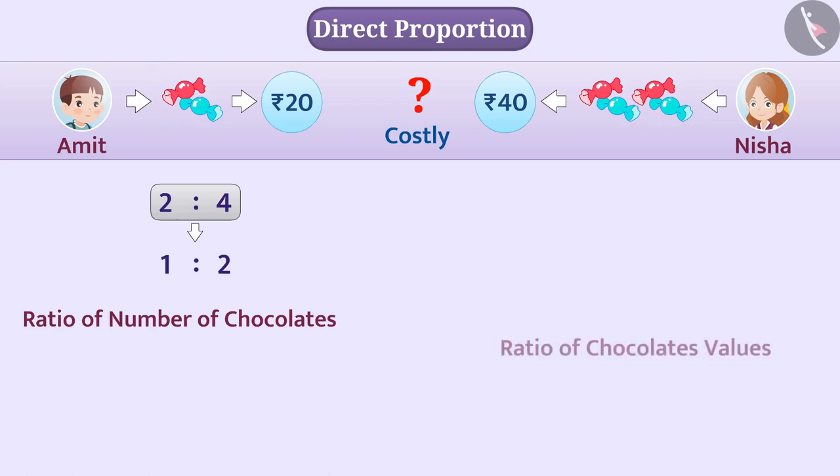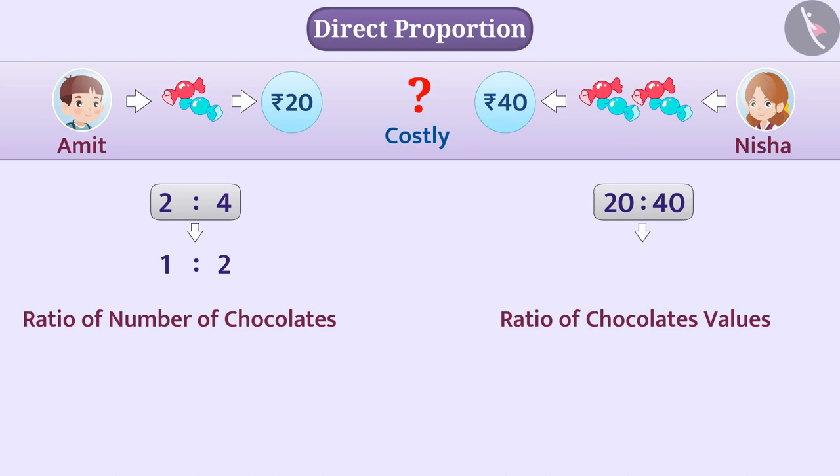Similarly, the ratio of their values is 20 is to 40, i.e. 1 is to 2. This shows that as the number of chocolates has doubled, their values also doubled. In this way, the price of chocolate depends on their number.